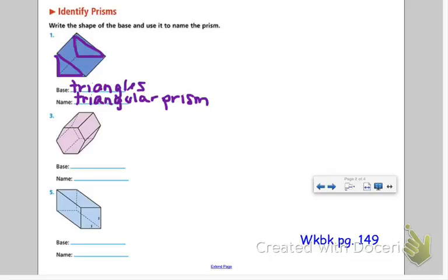However, the shape that there's two of is two hexagons. We have a hexagon here and we have this hexagon in the back.